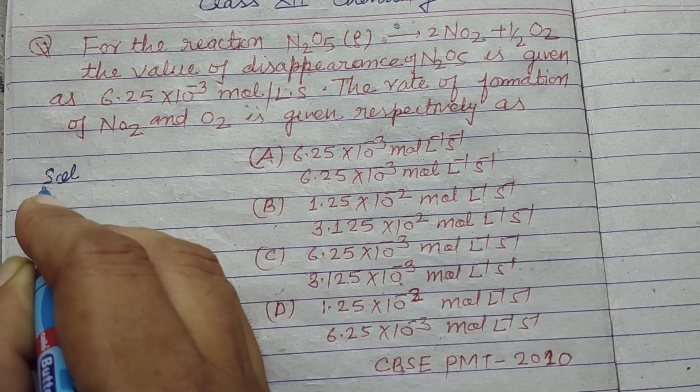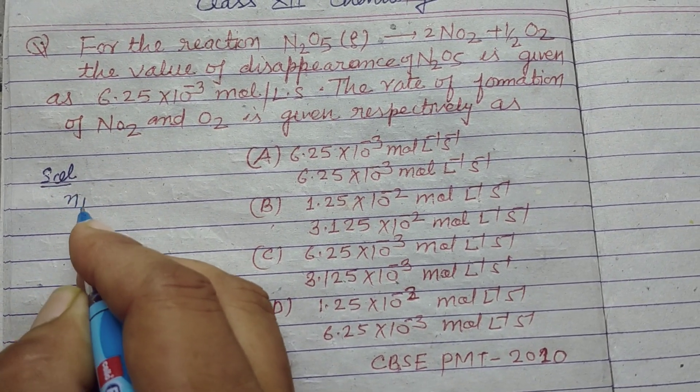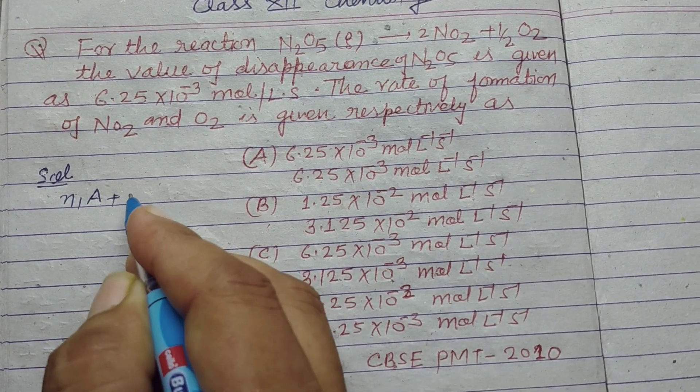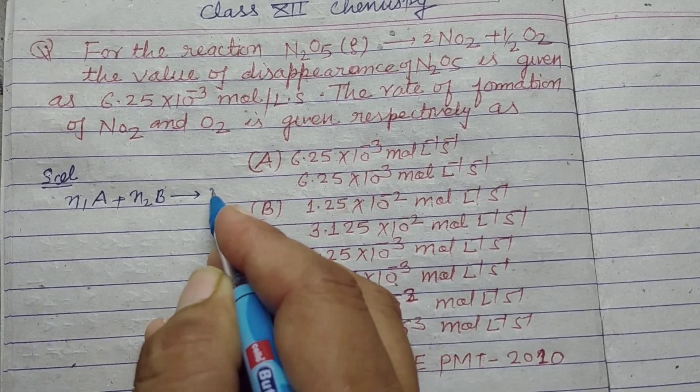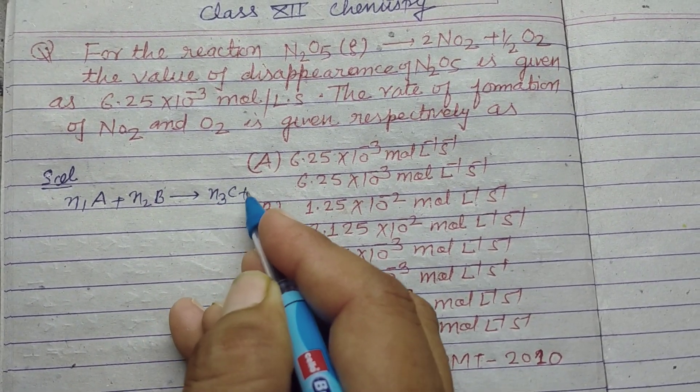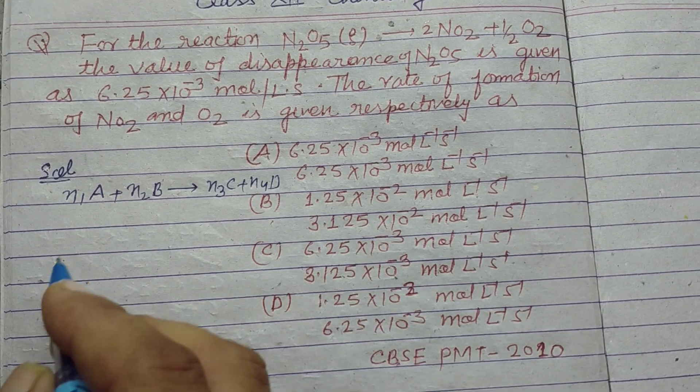So student, in chemical kinetics you know that any reaction n1A + n2B gives rise to n3C + n4D.